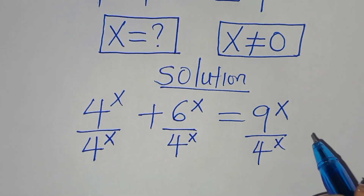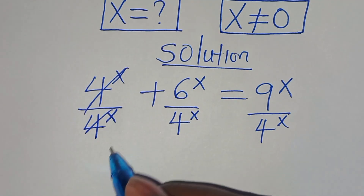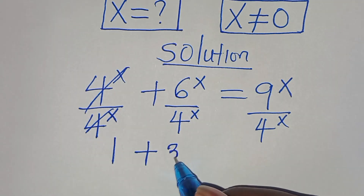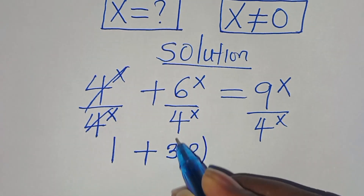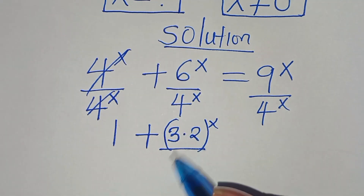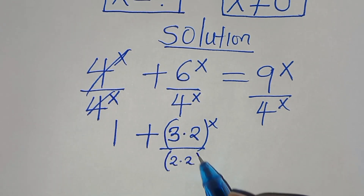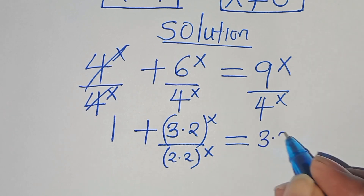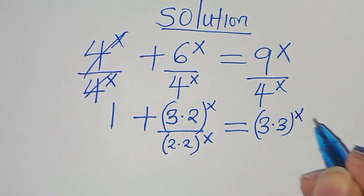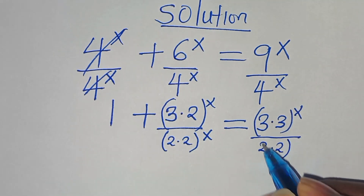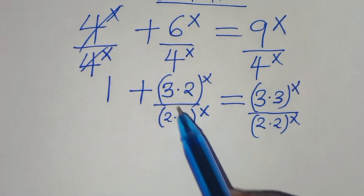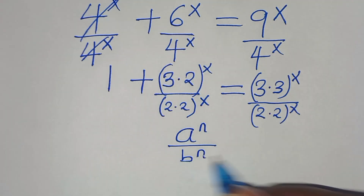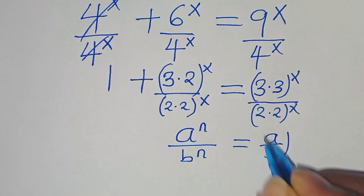So now, 4 to the power of x simplifies so that we have 1 plus — we can express 6 as 3 times 2, raised to the power of x, divided by 4, which can be expressed as 2 times 2, raised to the power of x. This is equal to 9, expressed as 3 times 3, raised to the power of x, divided by 2 times 2, raised to the power of x. This is in the form of a to the power of n divided by b to the power of n, which can be expressed as (a over b) raised to the power of n.